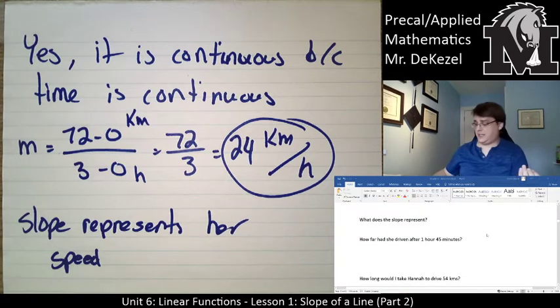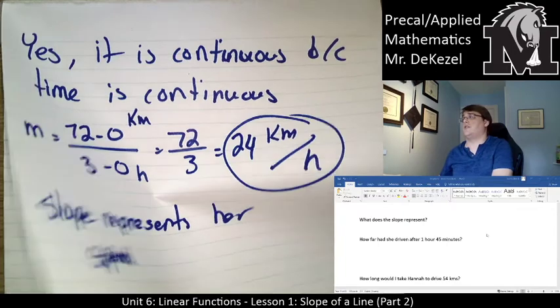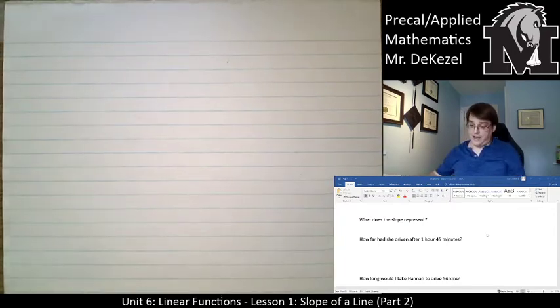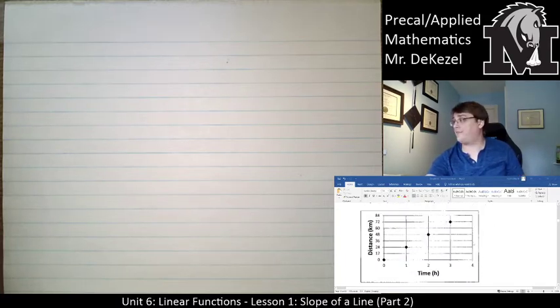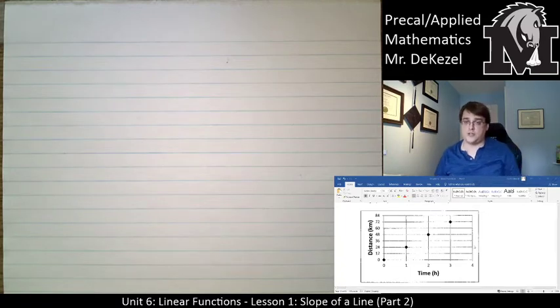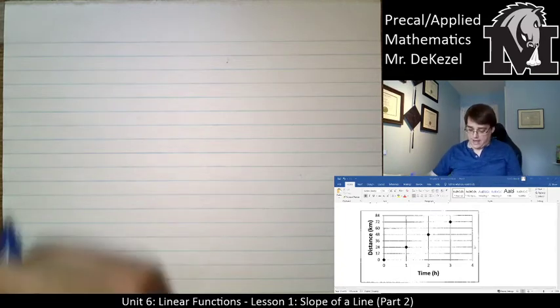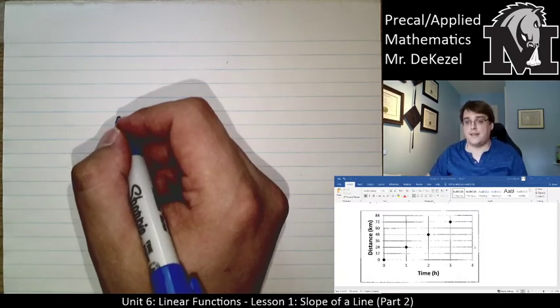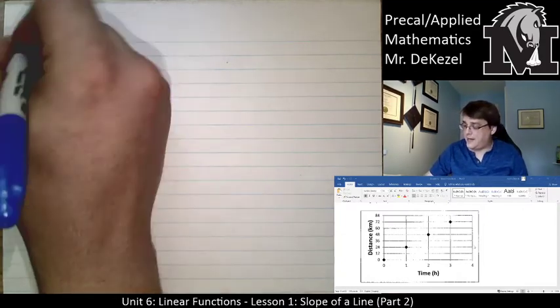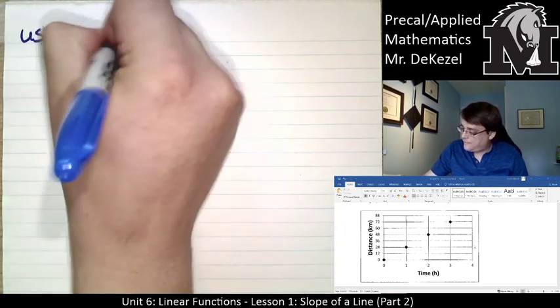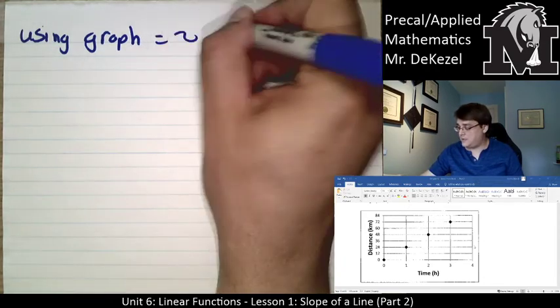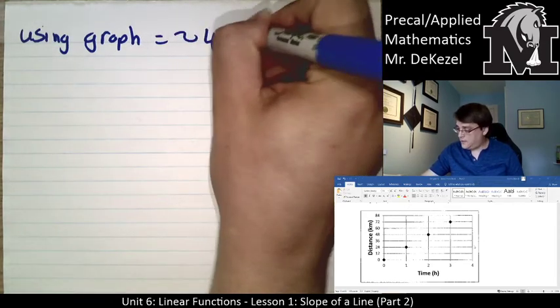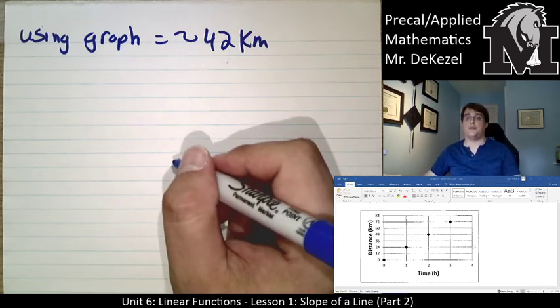So what we can do, because this data is continuous, we can estimate how far she's driven at 1 hour, 45 minutes. So we can do it with the graph. So if we look at our graph, we'd go 1 hour, 45 minutes. That's 1 hour and 3 quarters, so a little bit closer to 2. If we're going to follow that up, I would say that that would cross the line at approximately. So using the graph to find Hannah's distance after 1 hour and 45 minutes would be approximately 42 kilometers, as far as where the line meets up on the graph.